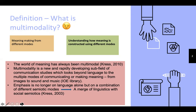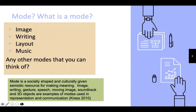There is a combination of linguistics and other semiotic modes in how we give meanings or relay messages to others. So what is a mode? There are four types of modes: image, writing, layout, and music.